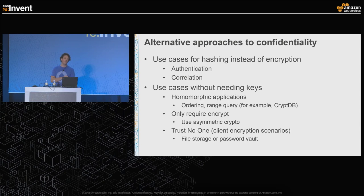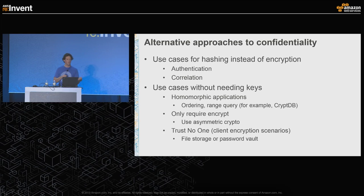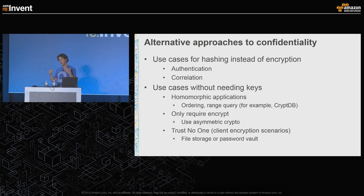There are also use cases where you're working on encrypted data but you don't need access to the keys. In a homomorphic application you'd be able to do operations on top of your encrypted data — things like ordering or range queries. A great example of this is the CryptDB paper out of MIT, where they took the MySQL database and offered almost every operation that database can perform on encrypted data.